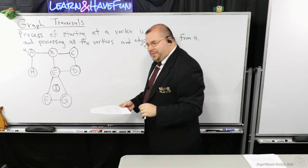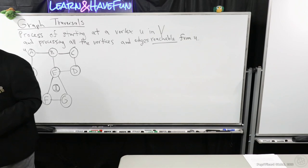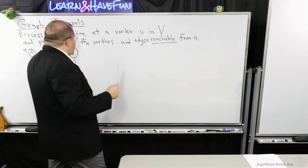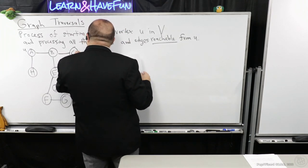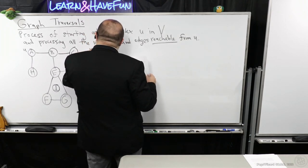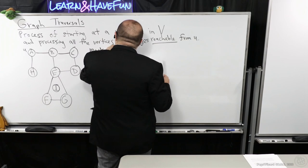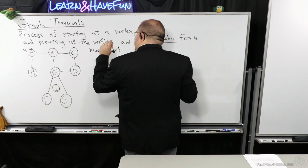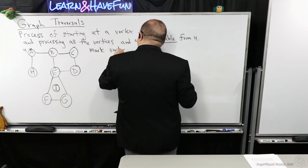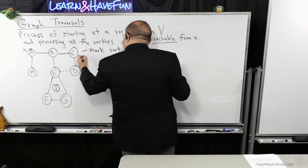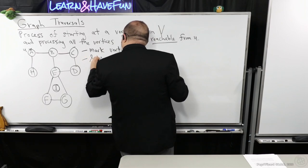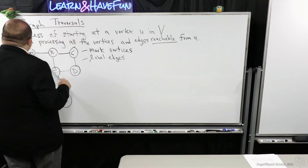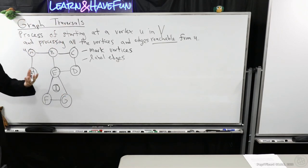There are at least a couple different ways you can explore a graph. What do I mean by processing a graph? I mean we'd like to mark vertices and label edges. If I can do that for everything reachable from U, I'll consider that processing the graph.